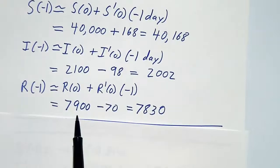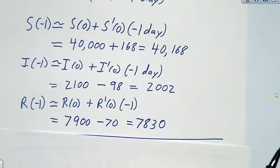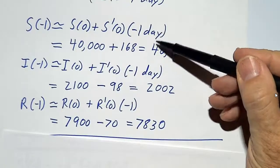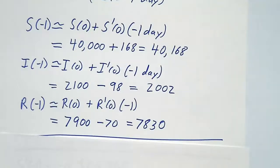We've got 7,900 rejecteds and we're gaining them at 70 per day, so we must have had 70 fewer of them yesterday. So the same idea can work only with multiplying by negative 1 instead of by 1 to go backwards one step at a time.